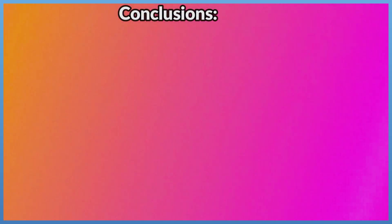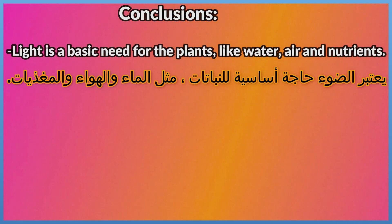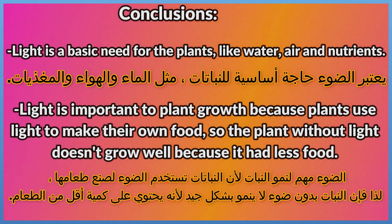Conclusions. Light is a basic need for the plants, like water, air, and nutrients. Light is important to plant growth because plants use light to make their own food, so the plant without light doesn't grow well because it had less food.